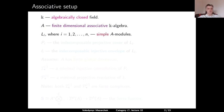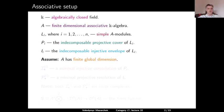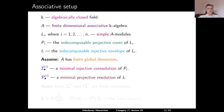We denote by P_i the indecomposable projective cover of L_i, and by I_i the indecomposable injective envelope of L_i. Until further notice, we assume that A has finite global dimension. Denote by I^i a minimal injective co-resolution of P_i, and by P^i a minimal projective resolution of I_i. Note that both I^i and P^i are finite complexes, because of our assumption that A has finite global dimension.